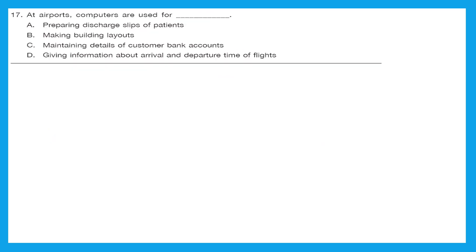Question 17: at airports, computers are used for A, preparing discharge slips of patients? No. B, making building layouts? No. C, maintaining details of customer bank accounts? No. D, giving information about arrival and departure time of flights? That's the right answer. Option D is the right one.